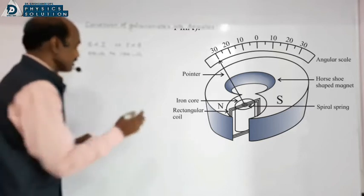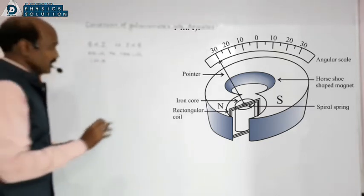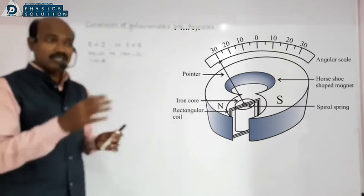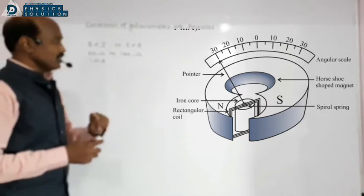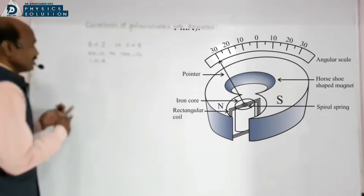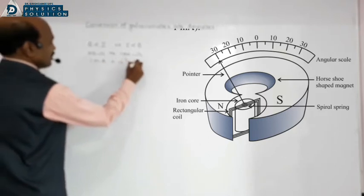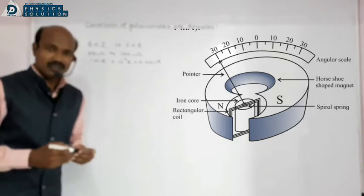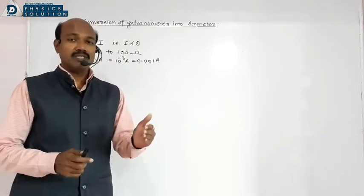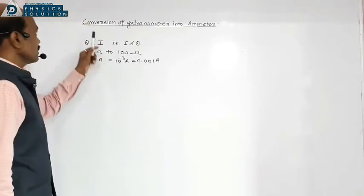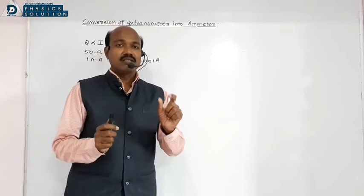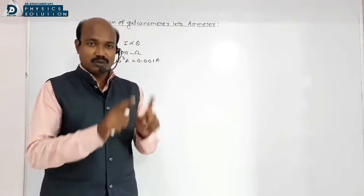The resistance of the galvanometer is about 50 ohm to 100 ohm, and its current carrying capacity is very low — about one milliampere. If more than one milliampere passes through it, the coil may be damaged. To avoid damage, the current passing through the galvanometer should not exceed one milliampere, that is 10 to the power minus 3 ampere, or 0.001 ampere.